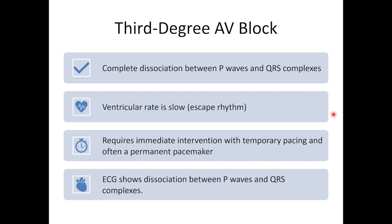Finally, let's talk about third-degree AV blocks, also known as a complete heart block. This is the most severe form and involves a complete failure of communication between the atria and the ventricles. The SA node continues to fire and stimulate the atria, but the AV node is completely blocked and no signals are reaching the ventricles.